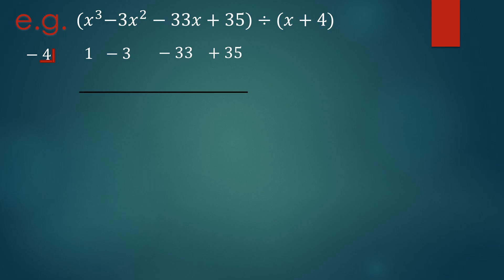Performing synthetic division: bring down 1, then multiply by negative 4 giving negative 4. Add negative 3 and negative 4 to get negative 7. Then negative 7 times negative 4 gives 28. Negative 33 plus 28 gives negative 5. Then negative 5 times negative 4 gives positive 20. Adding 35 and 20 gives 55. So 55 is the remainder.